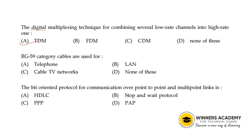RG-59 category cables are used for what? This is very important. RG-59, RG-58, and RG-11 are different cable types. RG-59 is used for cable TV.